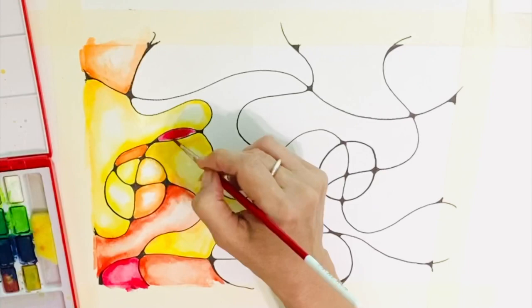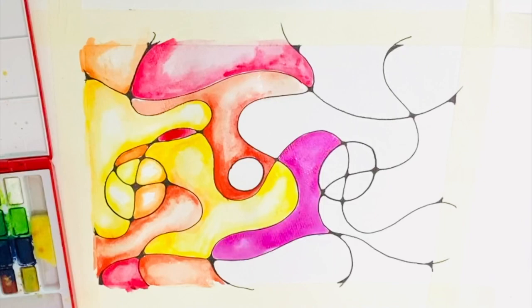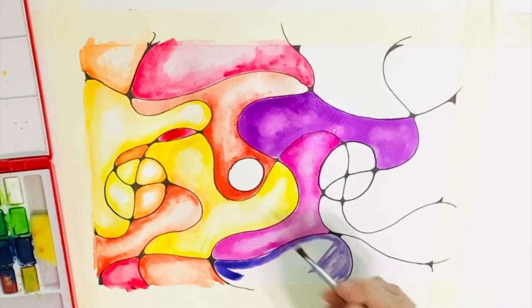One way to create depth, or a feeling of depth, is by using a wipey and absorbing some of the paint from the middle of your sections. I also added a second coat of paint in order to increase the intensity of colour.